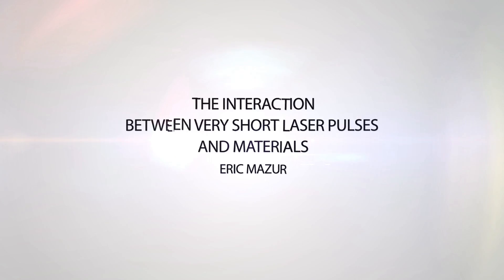By ultra short I mean pulses that are measured in femtoseconds. A femtosecond is 10 to the minus 15 seconds, or a millionth of a billionth of a second. If you take a billionth of a second and compare that to a second, it's like comparing a second to 30 years. Our laser pulses are a millionth of that time, so it's like a second compared to 30 million years. So they're very, very, very short.